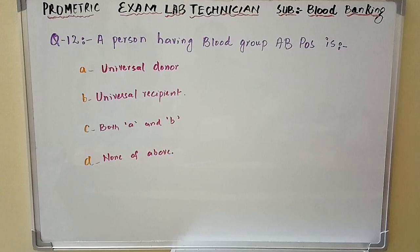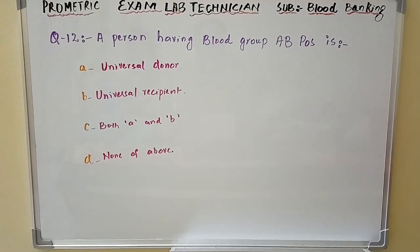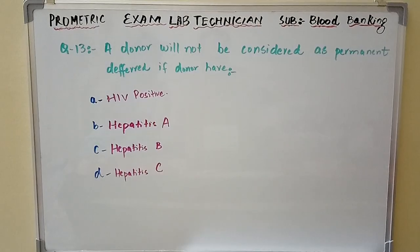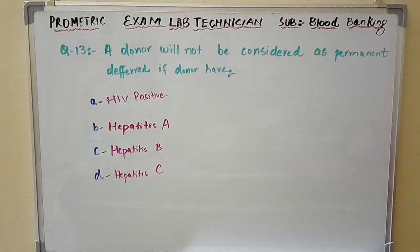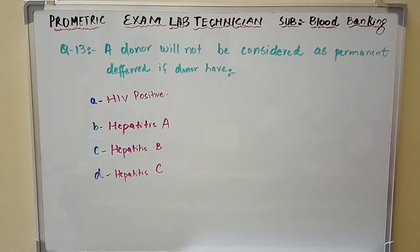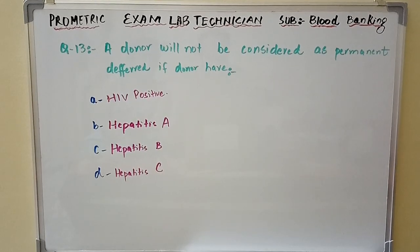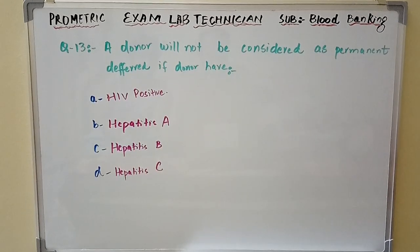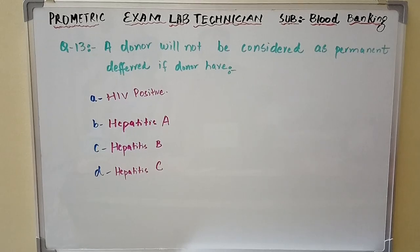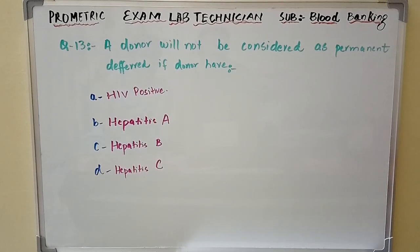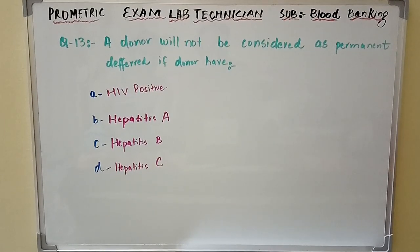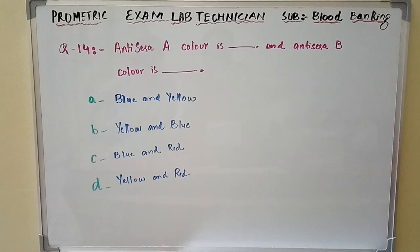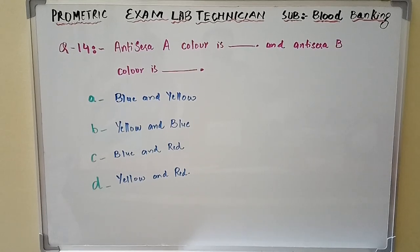Option D: none of the above. Question number thirteen: A donor will not be considered as permanently deferred if the donor has — Option A: HIV positive. Option B: hepatitis A. Option C: hepatitis B. Option D: hepatitis C.